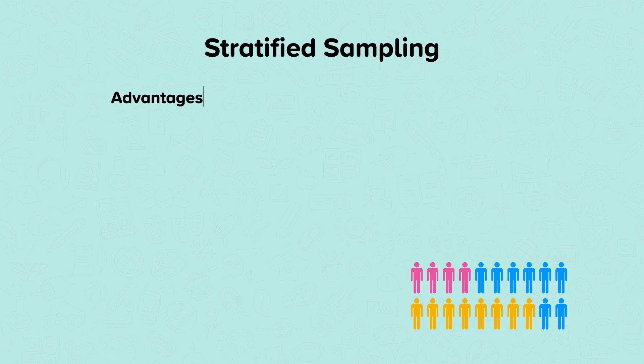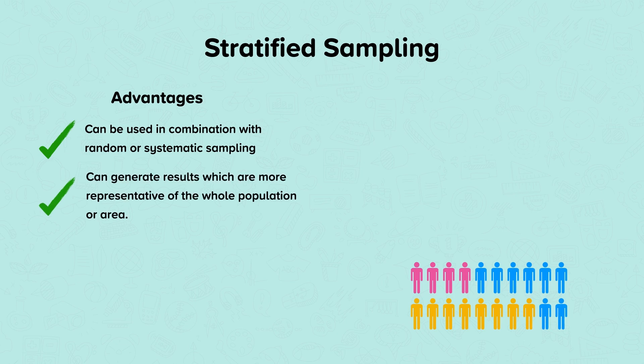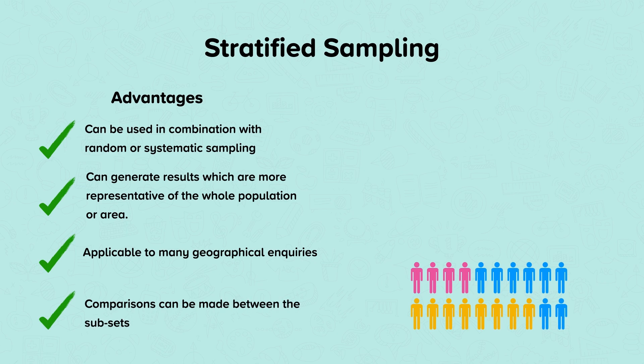Advantages of stratified sampling are that it can be used in combination with random or systematic sampling. It can generate results which are more representative of the whole population or area. It's applicable to many geographical inquiries. And comparisons can be made between the subsets.